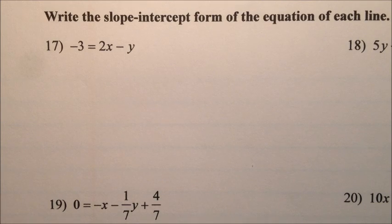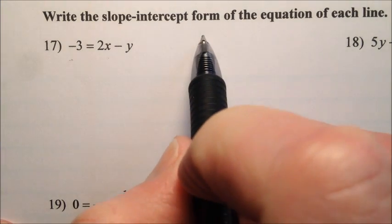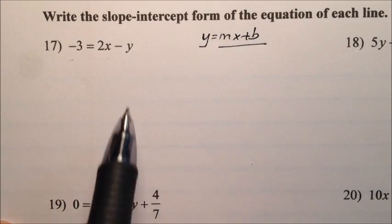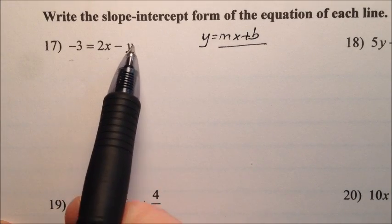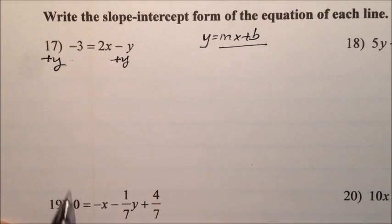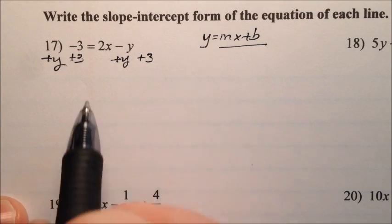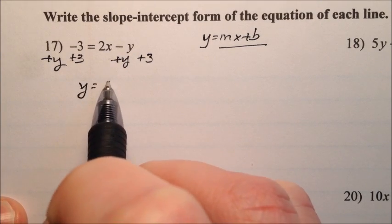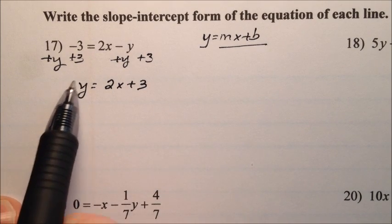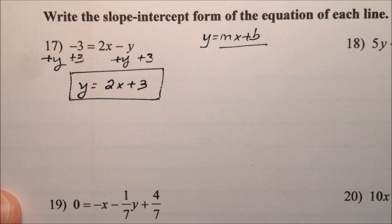So on number 17, we have negative 3 equals 2x minus y. If we want to put it in slope-intercept form, which is y equals mx plus b, we need to get this negative y over to the other side, so we can add y to both sides. We also want to get rid of this 3, so we'll add 3 to both sides. We'll have y equals 2x plus 3. Since y doesn't have any coefficient, we don't need to divide by anything. That is our answer.